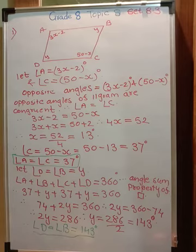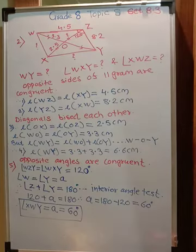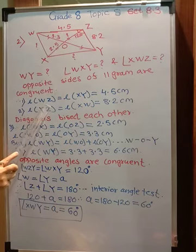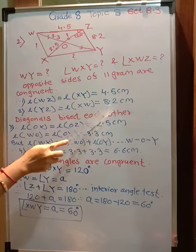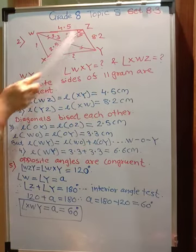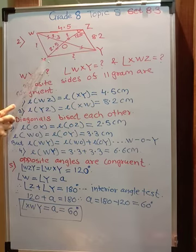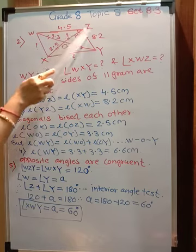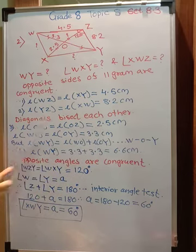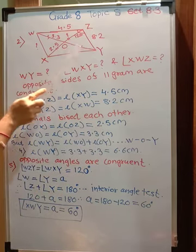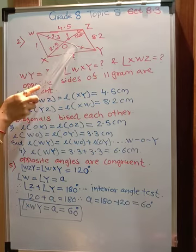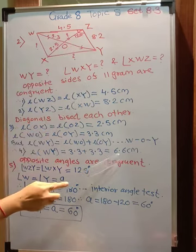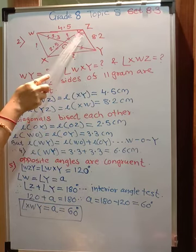Let us quickly go to the second problem, which is again a parallelogram. Opposite sides are equal, so WZ equals XY equals 4.5, and WX equals ZY equals 8.2. Diagonals bisect each other: if XO is 2.5, then OZ is also 2.5. WO and OY are both 3.3, so diagonal WY equals 3.3 plus 3.3 equals 6.6 centimetres.